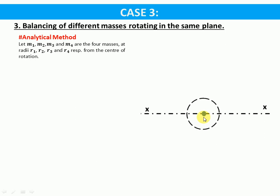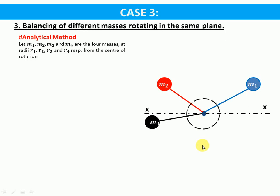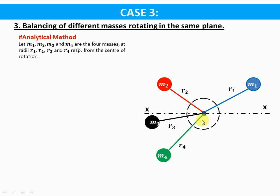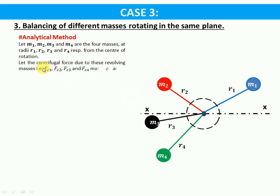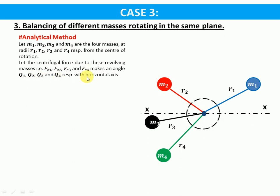This blue dot shows the center of rotation where masses m1, m2, m3, and m4 are acting on the same plane at radial distances r1, r2, r3, and r4 respectively from the center of rotation. Let the centrifugal forces due to these revolving masses - fc1, fc2, fc3, and fc4 - make angles theta1, theta2, theta3, and theta4 respectively with the horizontal axis.